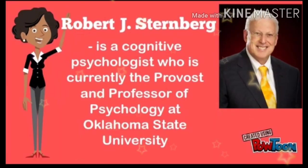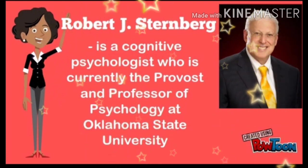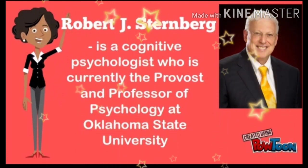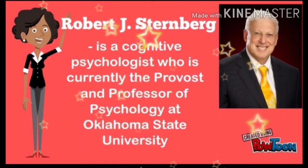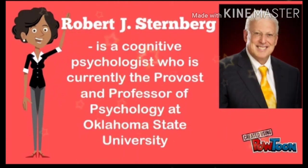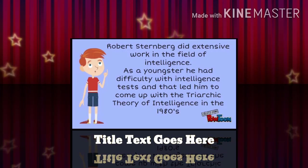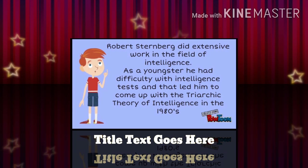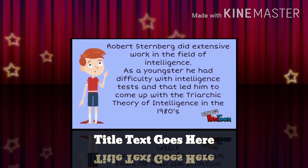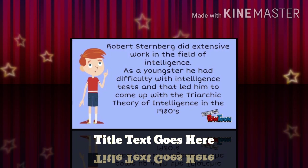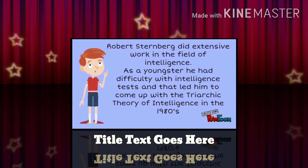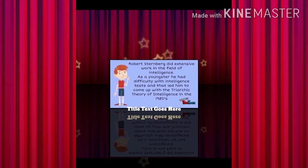Robert J. Sternberg is a cognitive psychologist who is currently the provost and professor of psychology at Oklahoma State University. Robert Sternberg did extensive work in the field of intelligence. As a youngster, he had difficulty with intelligence tests, and that led him to come up with a triarchic theory of intelligence in the 1980s.